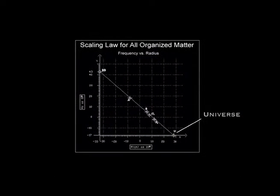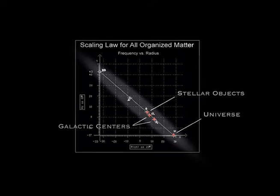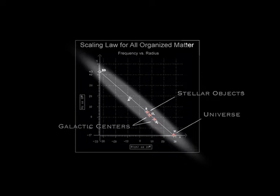The universe, with its black hole condition, was the first data point Haramain charted. He next added galactic centers and stars. They lined up in a linear progression with the universe. An amazing result.